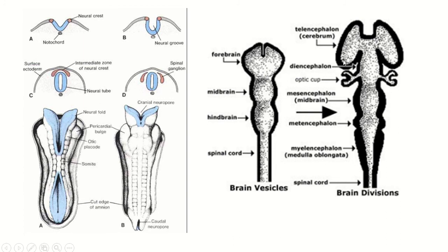The single cavity of the neural tube is divided into different parts. Within the telencephalon, the space is known as the lateral ventricle. Within the diencephalon, this is the third ventricle. Within the mesencephalon, this is the cerebral aqueduct. The fourth ventricle is within the metencephalon and myelencephalon, and the cerebral aqueduct continues as the central canal in the spinal cord.